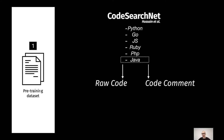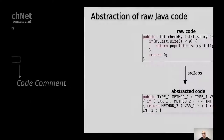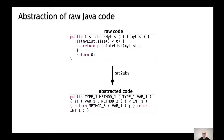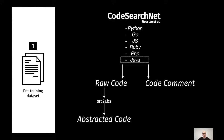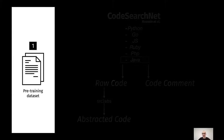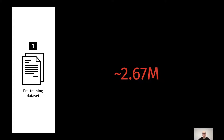After that, we took these Java methods and also applied an abstraction process with source2abs. Source2abs is an external tool that takes as input the Java method — in this case the raw code — and gives as output an abstracted version of it, as you can see below. After that, we obtain the abstracted code, ending up with a number of pre-training instances that roughly equals 2.67 million.